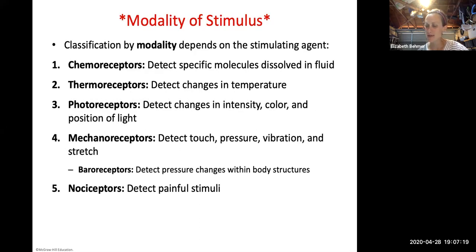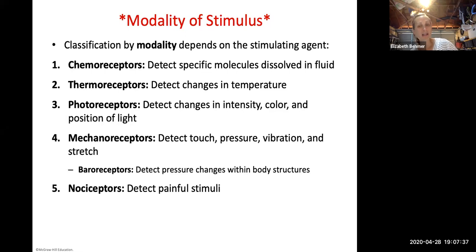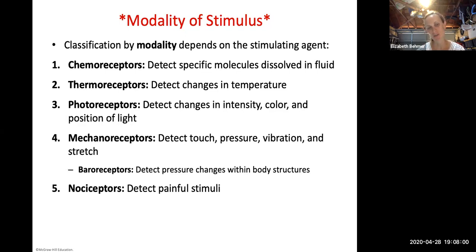The five modalities of stimuli: chemoreceptors detect specific chemical molecules dissolved in fluid; thermoreceptors detect changes in temperature; photoreceptors detect changes in intensity, color, and position of light; mechanoreceptors detect touch, pressure, vibration, and stretch. A baroreceptor is a specific type that detects blood pressure changes — there's a large one in your aorta. Nociceptors detect anything painful. Chemoreceptors and mechanoreceptors are likely test questions.